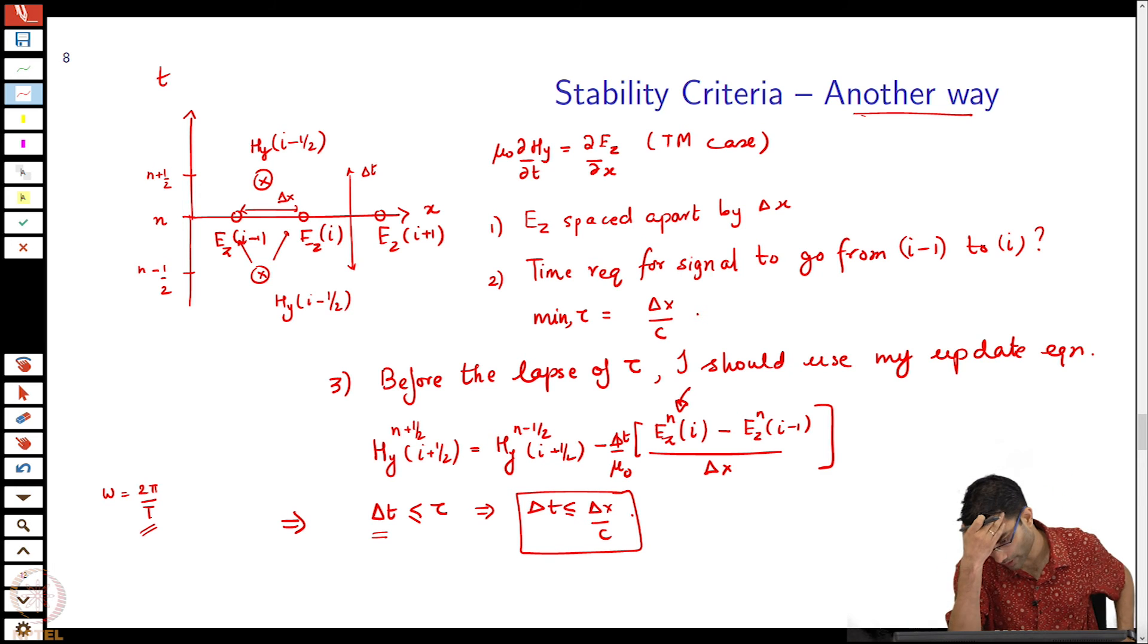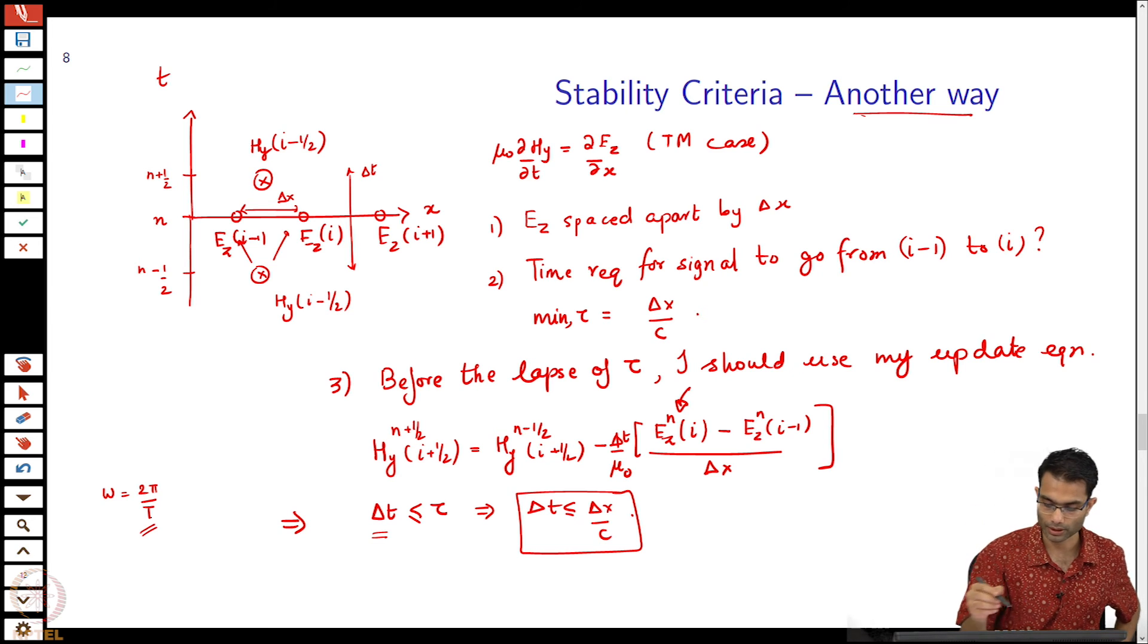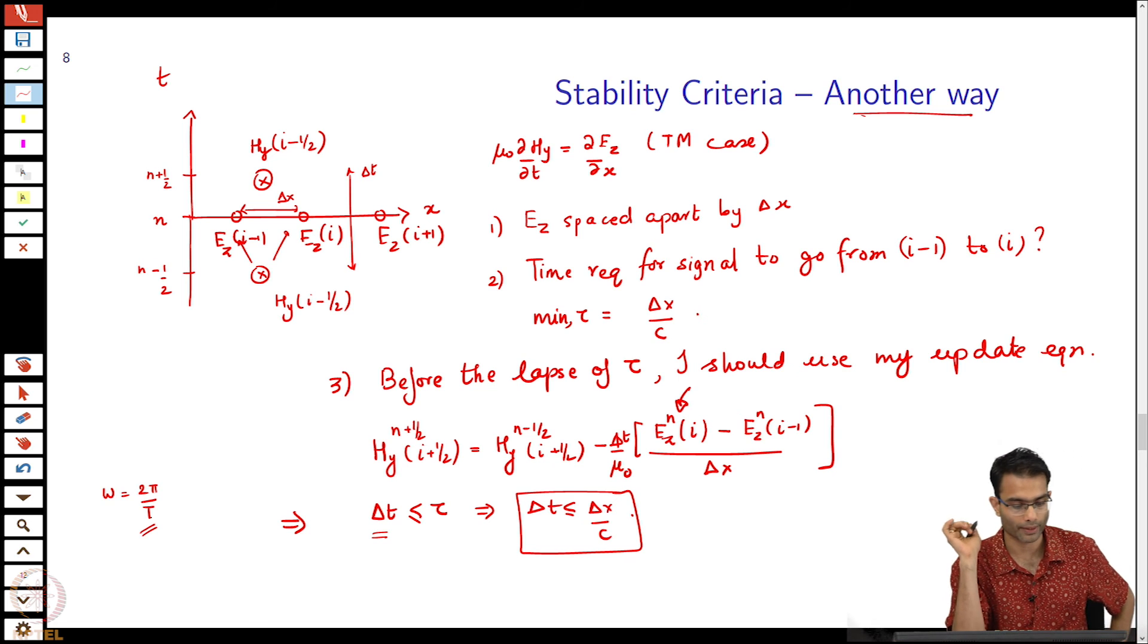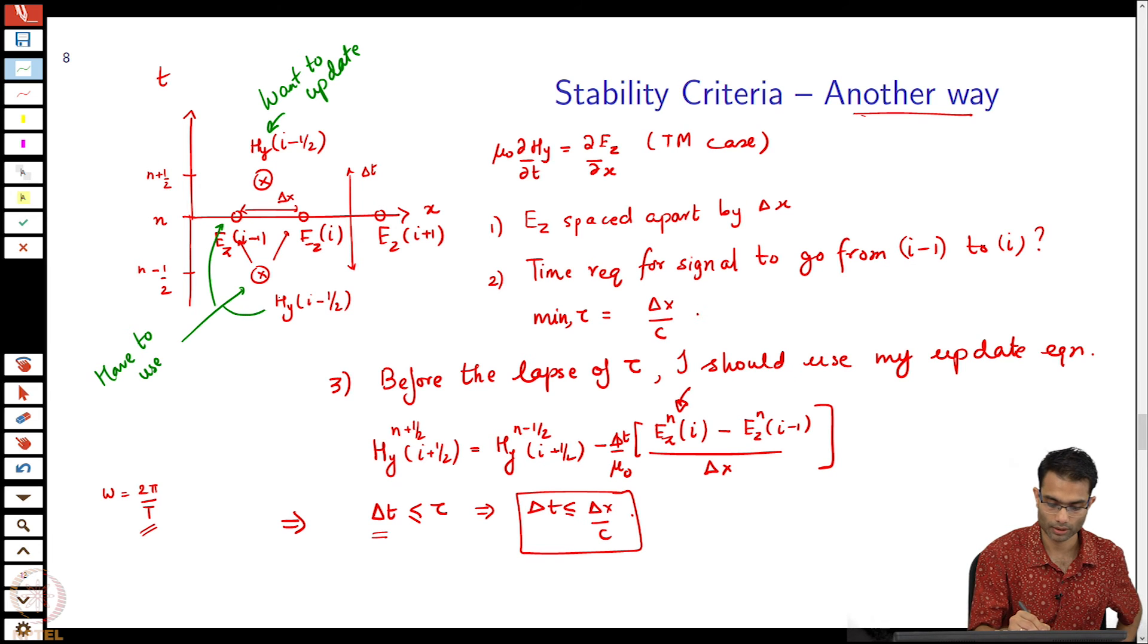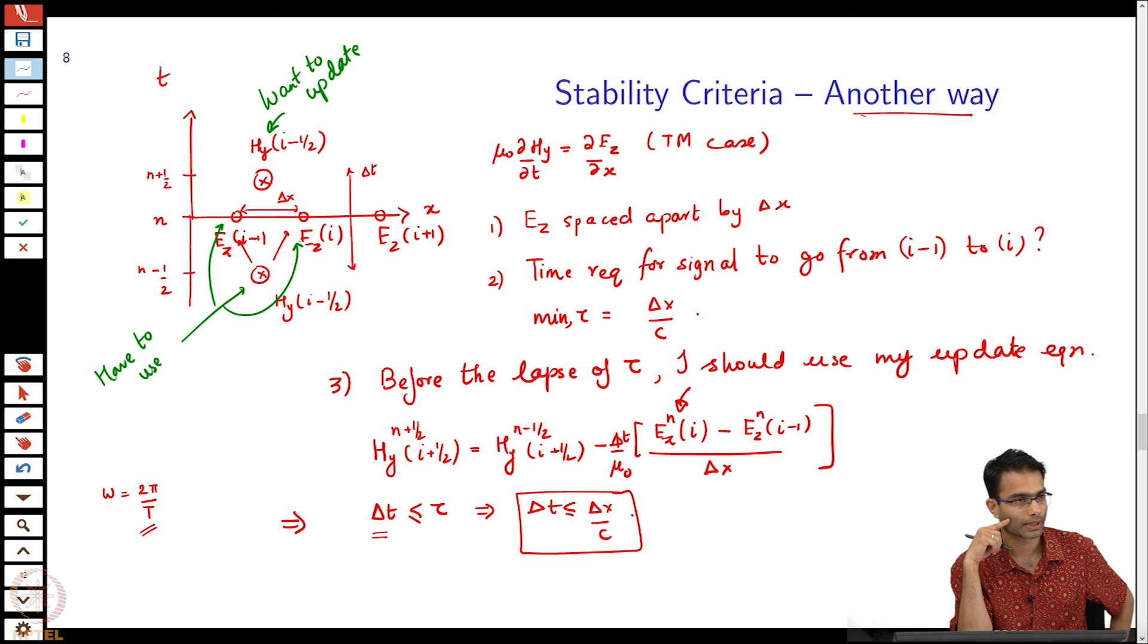The first part is clear: space the Ez apart by delta x. Then we are saying that in this equation when I want to update Hy, I want to update this guy. What all do I have to use? I have to use this guy, this guy and this guy as per the formula. When I am going to use these equations, these had better represent my current estimate of these quantities. Sounds obvious, but of course they should be current.